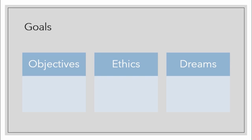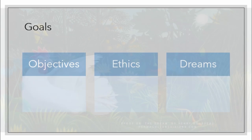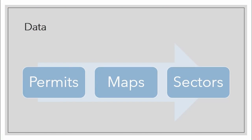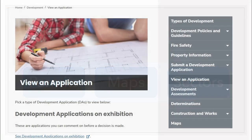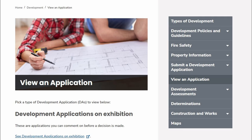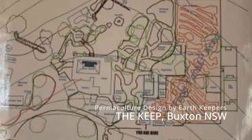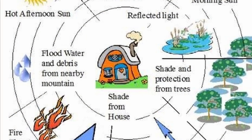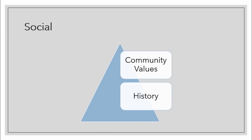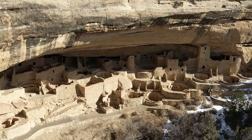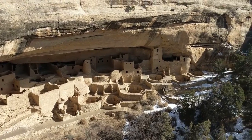We have goals and objectives — the client's objectives — we have ethics, and sometimes there can be a conflict of ethics, and we have dreams. In the data, we're going to be looking for permissions or permits required, we're going to look at different types of maps and probably do some mapping ourselves to get the finer details, and we're going to look at sectors — all the different natural energies that come to the site. When looking at the social aspects of a design, we look at the historical use of that site and whether that should be honored, and then the community values.